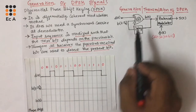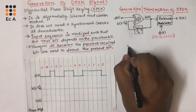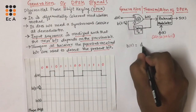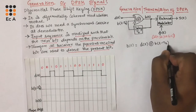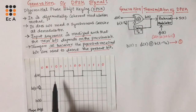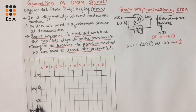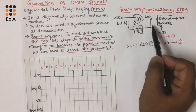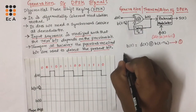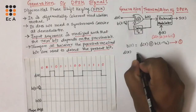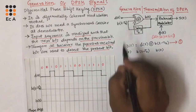Now let us take an example and understand how the sequence B(t) is generated. The output sequence B(t) is equal to D(t) XOR with B(t - Tb) — let us take this as equation number 1. Now let us consider a sequence as an example. Depending upon D(t), we will find the sequence B(t - Tb) as well as B(t), which is the output sequence. Before going to this waveform, let us write the truth table for the exclusive-OR gate. The inputs are D(t) and B(t - Tb), and the output is B(t).